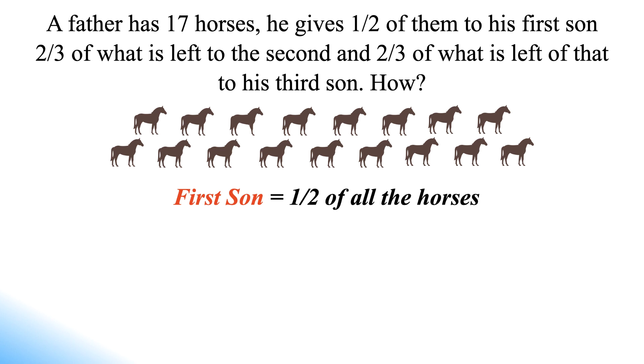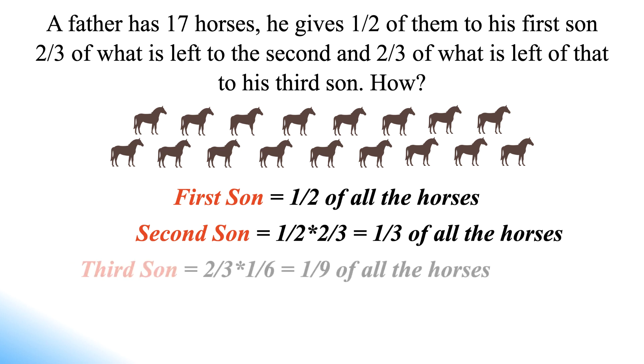According to the puzzle, the first brother receives half of all the horses. The second brother receives two-thirds of the remaining half, which is one-third of all the horses. The last brother receives two-thirds of the remaining one-sixth, which is one-ninth of all the horses.